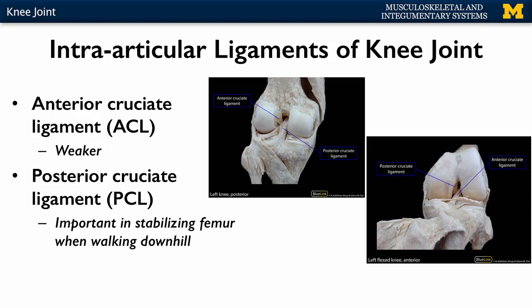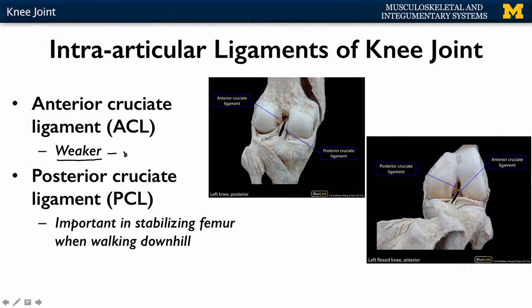Continuing on — now we're talking intra-articular, so within the articular capsule — we have two main ligaments you need to understand. You've probably heard of these, particularly if you're into sports: your ACL and your PCL — the anterior cruciate ligament and the posterior cruciate ligament. You can see the ACL in the more anterior view and the PCL more clearly in a posterior view. If you've heard of either of these, you've probably heard of the ACL more, and the reason is that it is significantly weaker and more often damaged.